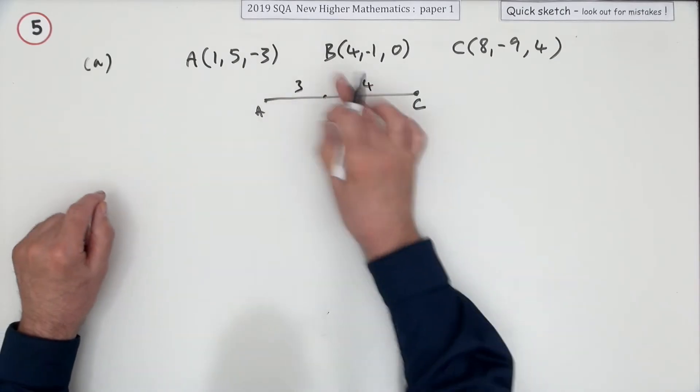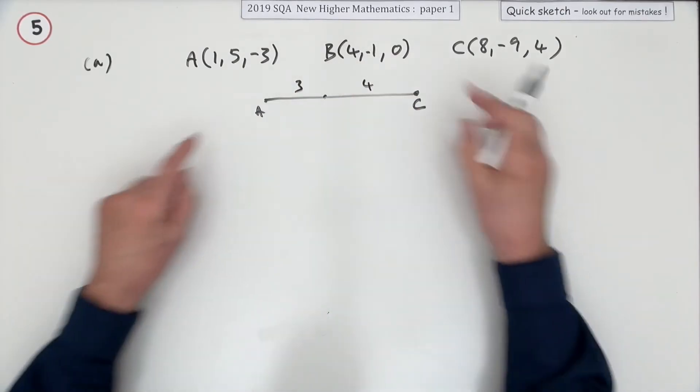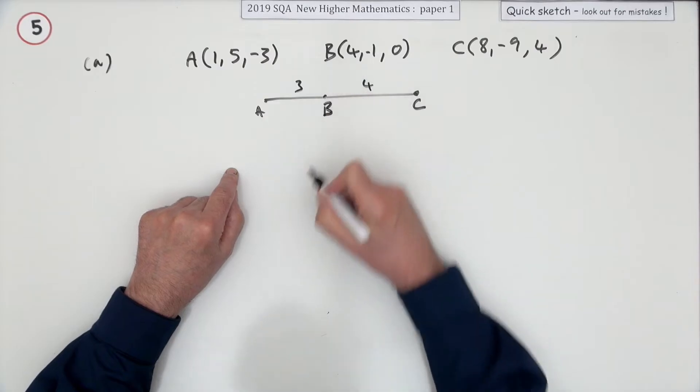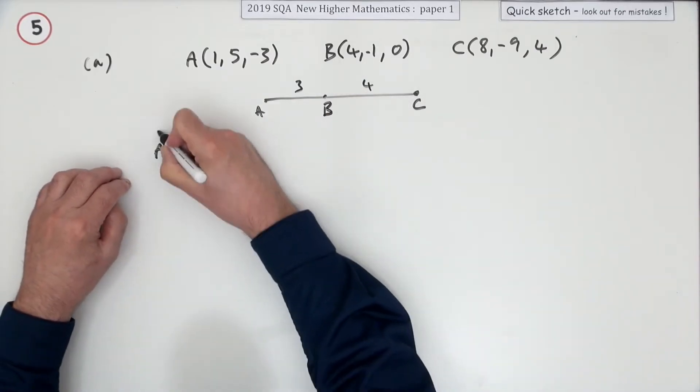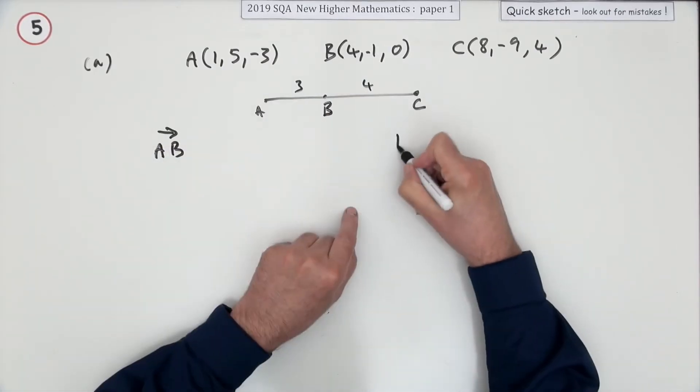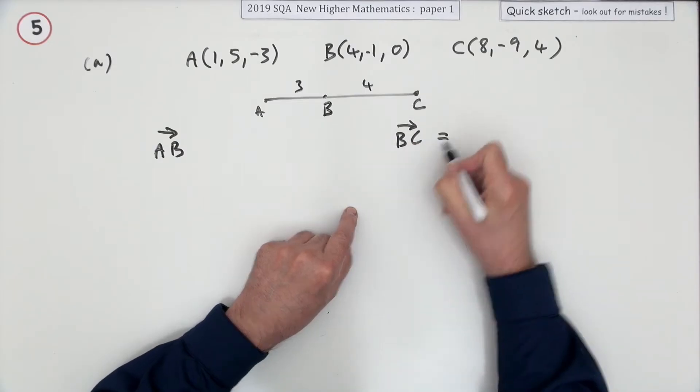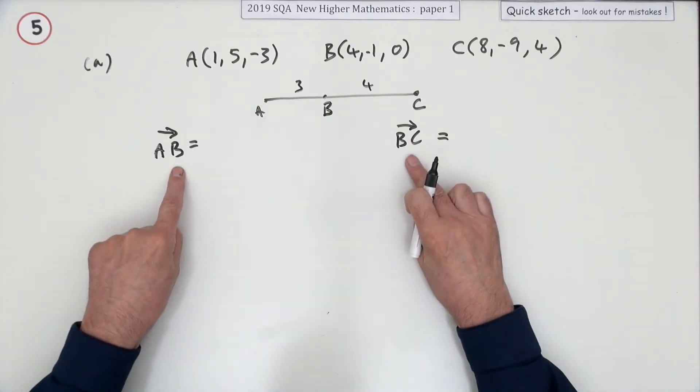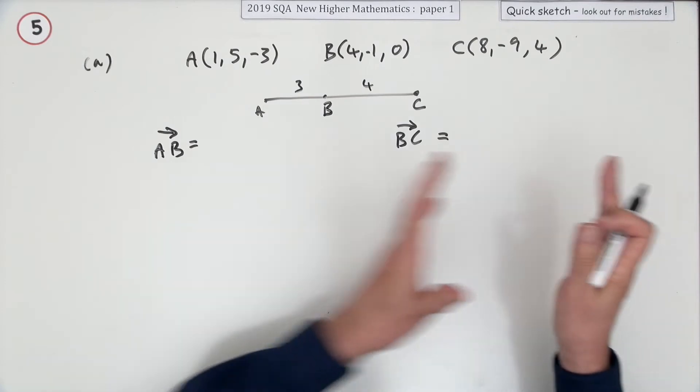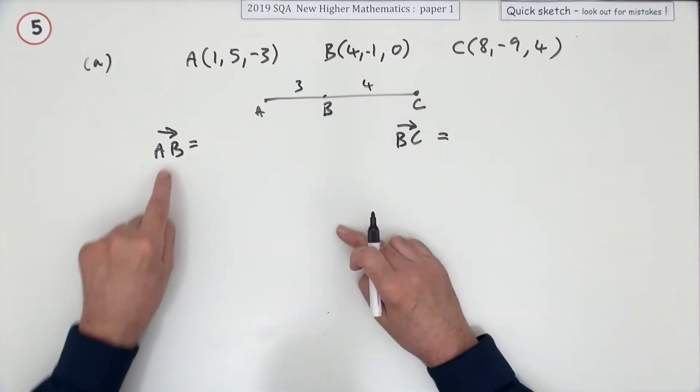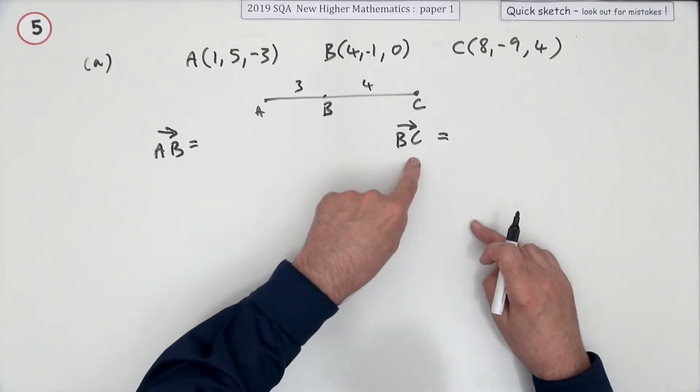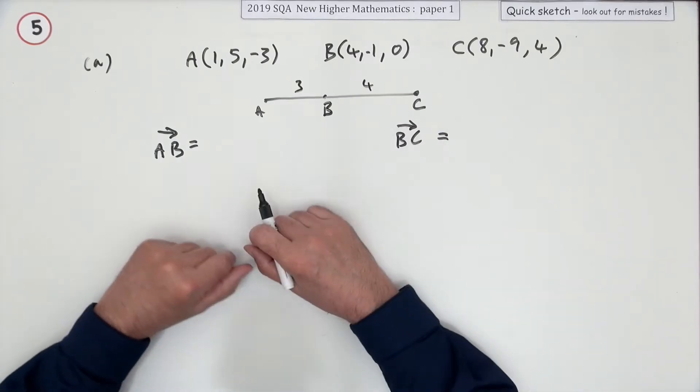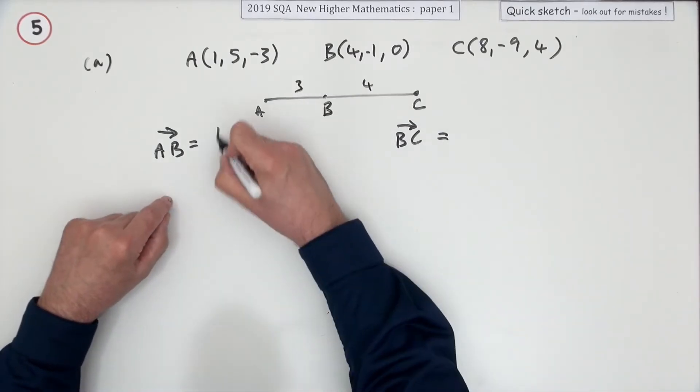Now the way you show it is to find vector AB, vector BC, and show that these vectors are either multiples of a common vector, or show that one is a multiple of the other, meaning they're parallel and then joined at B.